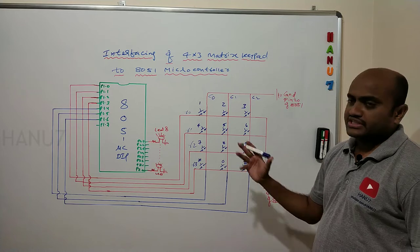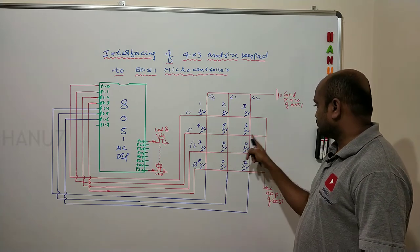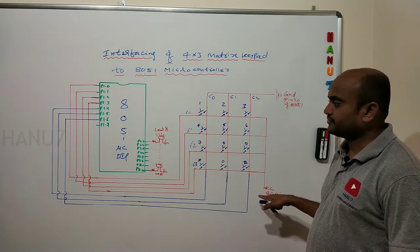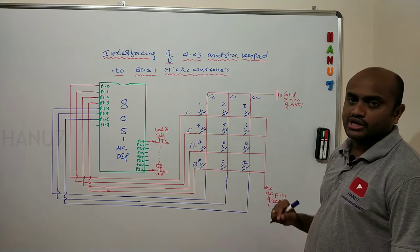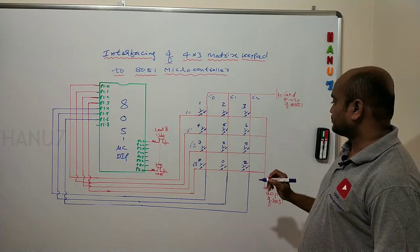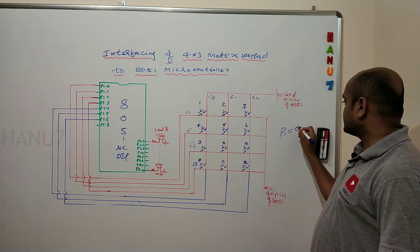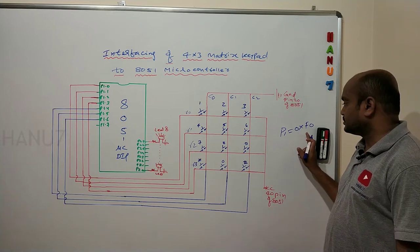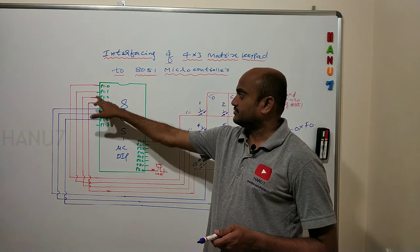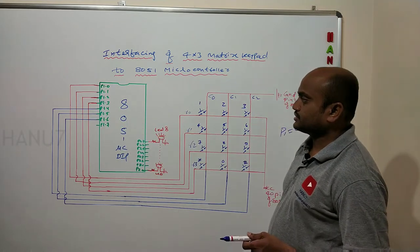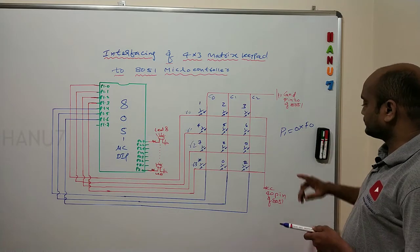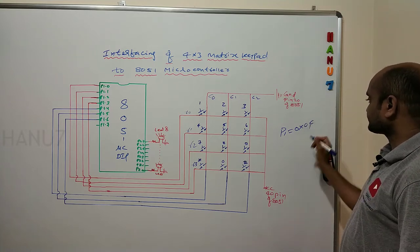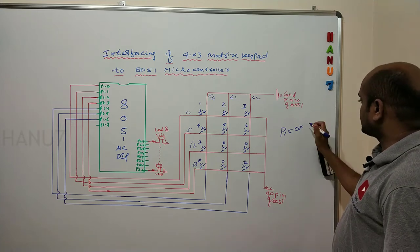The logic we are implementing here is: we are pulling all four rows to logic high. I have connected these four rows to VCC terminal, and I have connected three columns to ground. This can be done in the program by using the code P1 = 0xF0. By writing P1 = 0xF0, I am giving all ones in the first four bits and zeros in the next three bits.